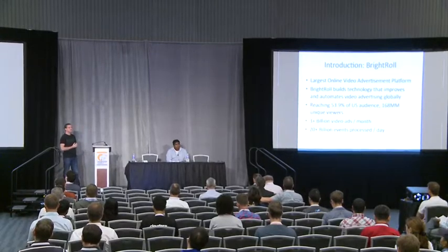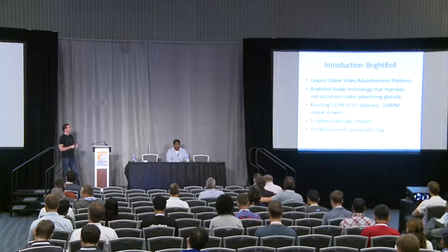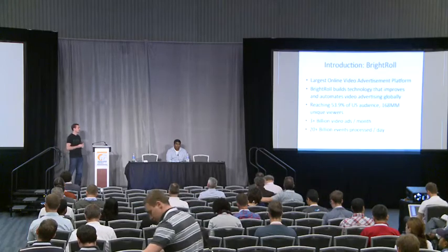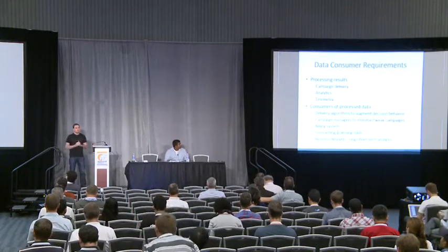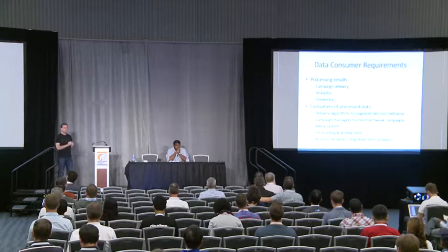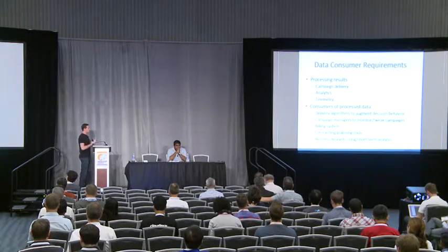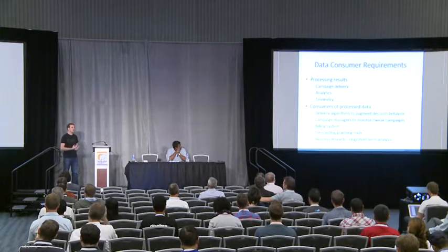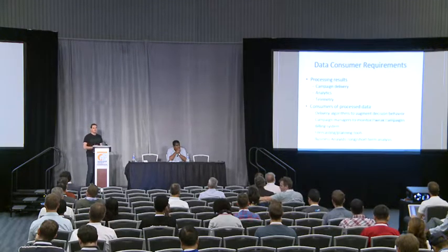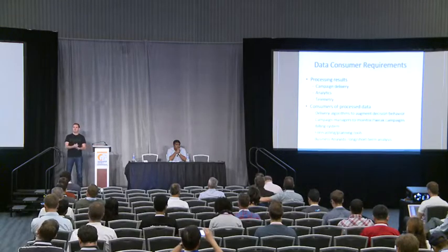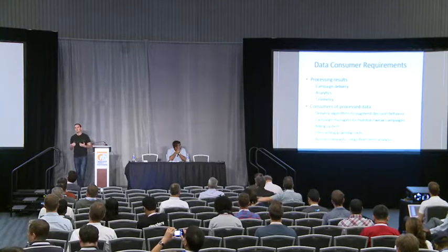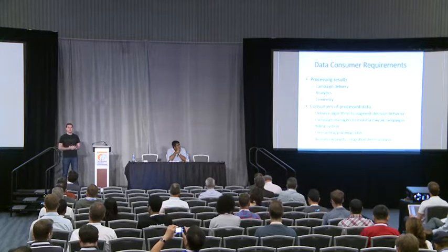These are the scale numbers we are dealing with at Brightroll at this point, and the trending graph has been increasing dramatically. We have a few different consumers of data at Brightroll. They process different data for different purposes. Some of the results that come out of the processing pipeline include campaign delivery — things such as how many impressions or how many ads have been shown within a time period, how many clicks resulted on those ads shown, and all sorts of metrics that inform an advertiser on how well their campaign is doing, the health of their campaign.